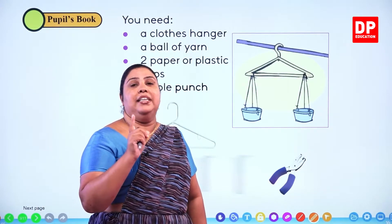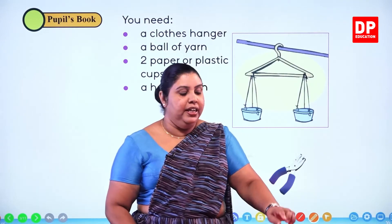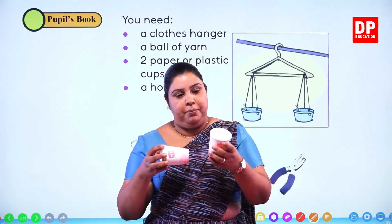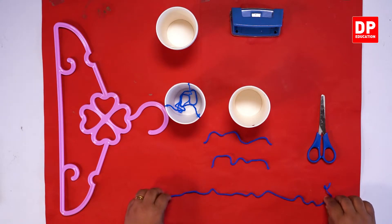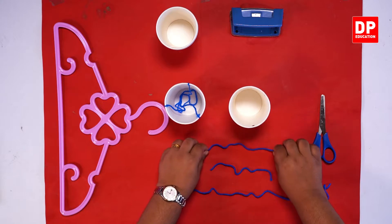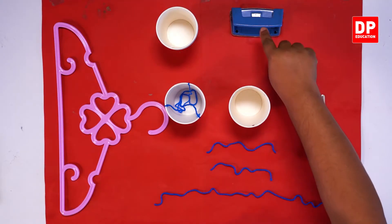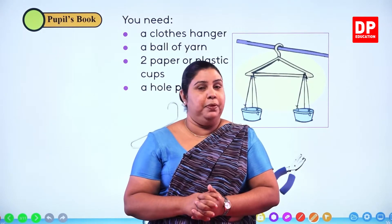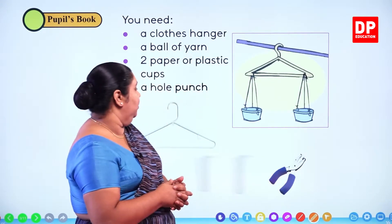So now we are going to take a look at these things that we need. Right, now you can see all the little things that I have assembled here. These are the things that we need. We are using a clothes hanger to make this scale. We have paper cups. Actually you can use either a paper cup or a plastic one. Then we need some strings — a ball of yarn. I also have my pair of scissors and a punch to make the holes in these paper cups. So now let's see how we are going to make this — a pair of scales. Let's take a look at the next slide.